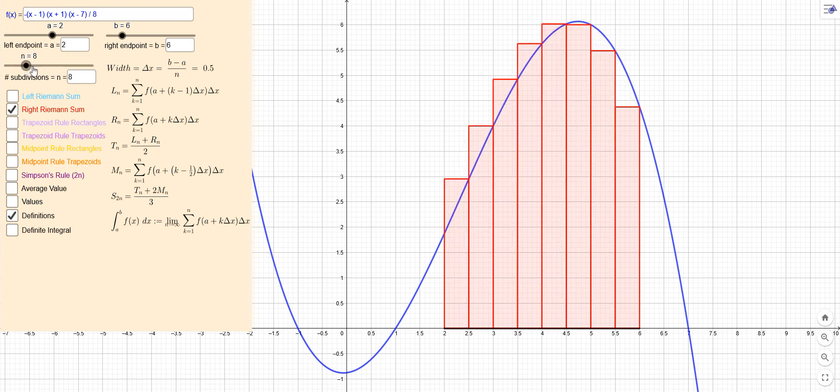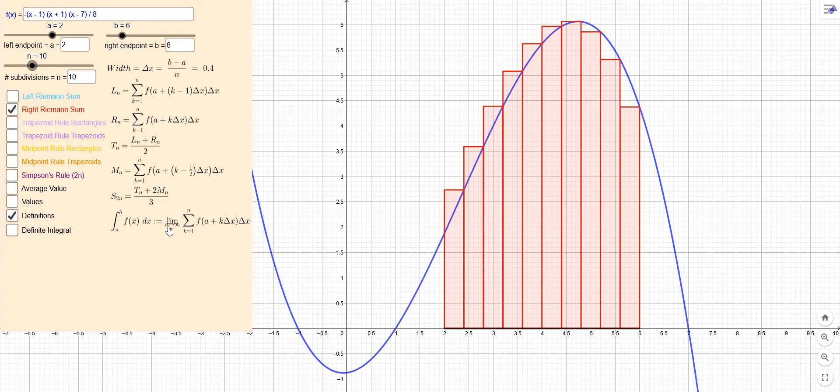And again, that approximation gets better and better as n gets bigger and bigger. And that leads us to what we call the definite integral right here, which here I did it with the right Riemann sum and then took the limit as n goes to infinity. And consequently, the way we've got it set up, delta x goes to zero. And that's one way to set up the definition for the definite integral, which is right there.